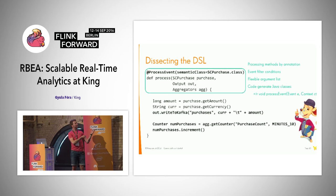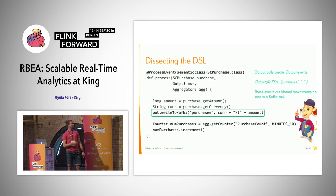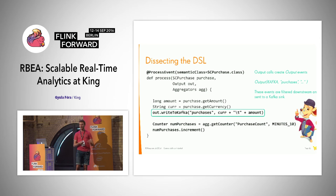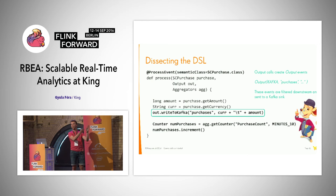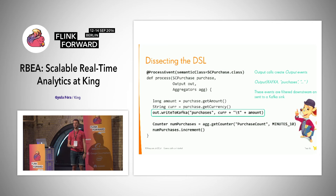The first very interesting thing in this script is calling the write-to-Kafka event. Here the user says write to the 'purchases' topic with some data. What happens underneath is that we don't actually write anything to Kafka at this point — we just create a new output event which should be written to Kafka, with the necessary metadata like the topic and the data bytes. Then these events are output from the CoFlatMap operator, and downstream we filter these and send them to a Kafka sink that writes them.